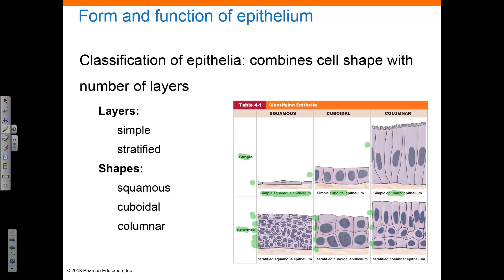When we speak of the apical surface of the cells, we are talking about the free edge — the apical edge of the cell — which will be what faces the environment. The basement membrane that connects these cells to the connective tissue below is also visible here.